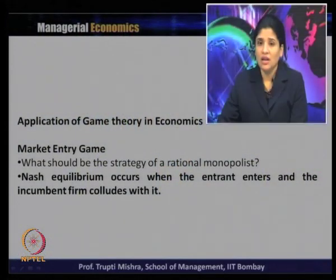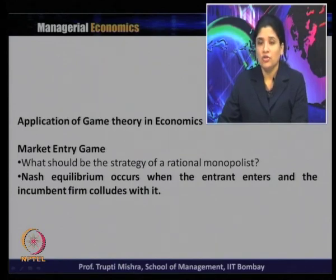The Nash equilibrium occurs when the entrant enters and the incumbent firm collude with it. If you look at the payoff matrix, that is the case where both of them are getting a market share — in all three other options either one of them is getting zero or minus. When the new firm enters and the existing firm collude, whatever market share they get is more preferable for both the monopolist and the new firm if they are acting rationally.